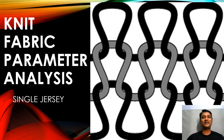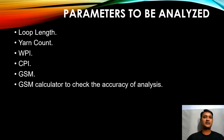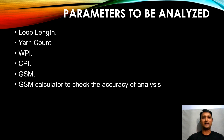Welcome to Money Text Guru. In this video, we are going to learn about knit fabric parameter analysis of a single jersey fabric. The different parameters we are going to analyze today are loop length, yarn count, wales per inch, courses per inch, GSM, and finally a GSM calculator — a tool to cross-check the accuracy of our analysis.